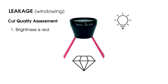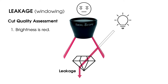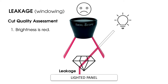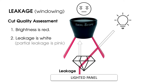Alternately, if light escapes through the bottom of the stone, that's leakage — it means the facets are acting as windows instead of mirrors. A viewer looking through the lens sees through the bottom of the diamond. Professional IdealScope setups use a lighted panel under the diamond to expose obvious leakage. So in IdealScope cut quality assessment, a viewer will see leakage as white or light pink.